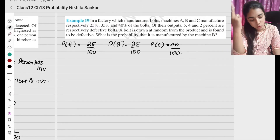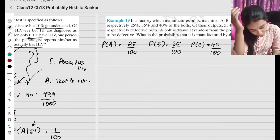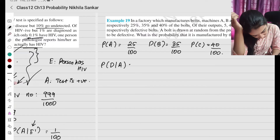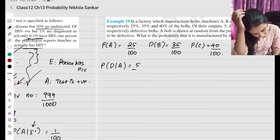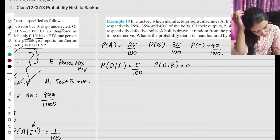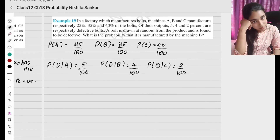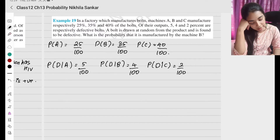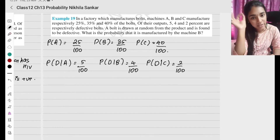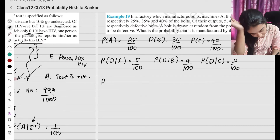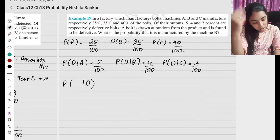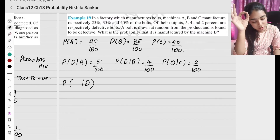Of their outputs, 5%, 4%, and 2% are respectively defective bolts. So the probability that it is defective from machine A is 5 by 100, from machine B is 4 by 100, and from machine C is 2 by 100. A bolt is drawn at random and is found to be defective. What is the probability that it is manufactured by machine B?